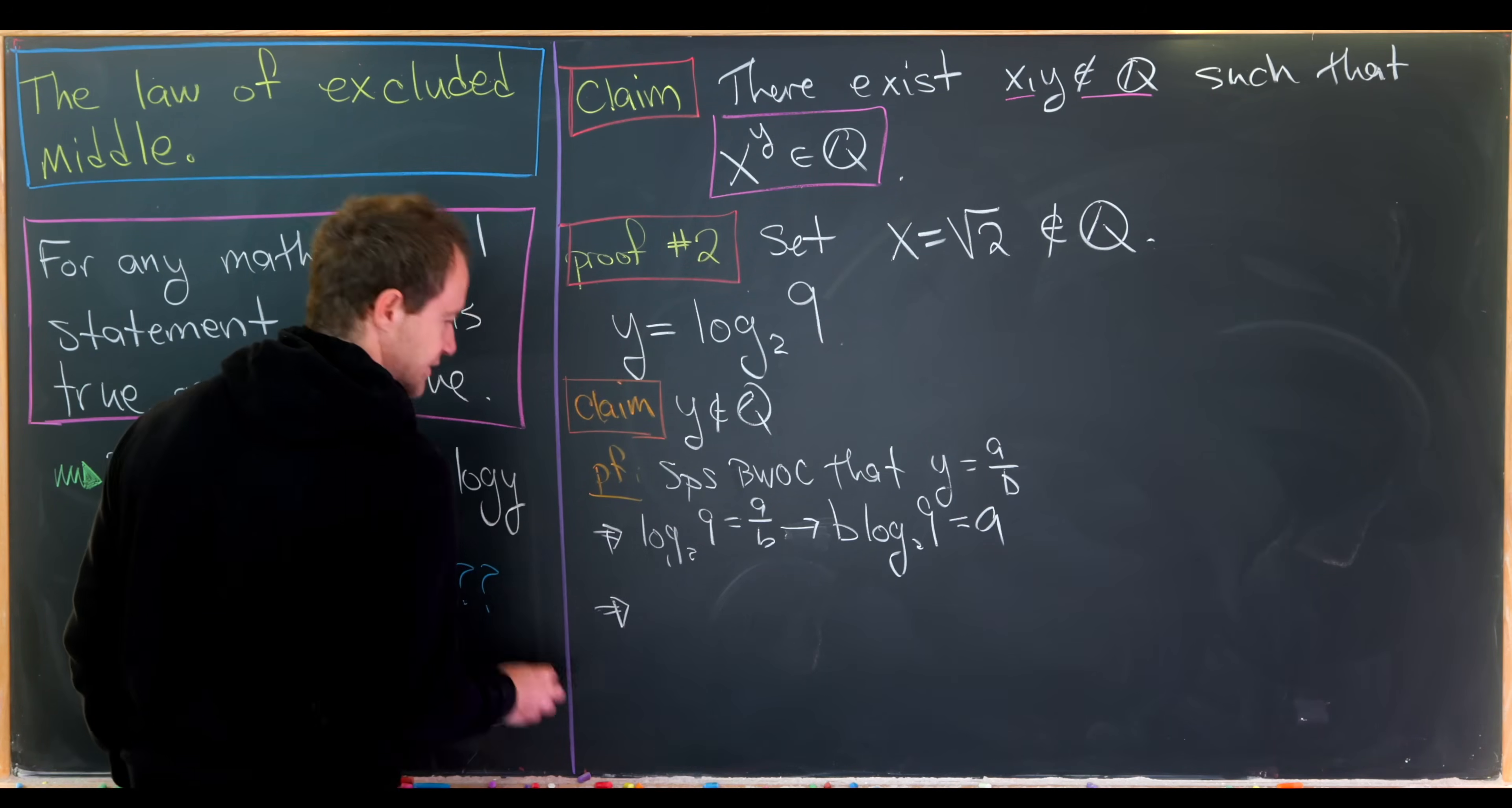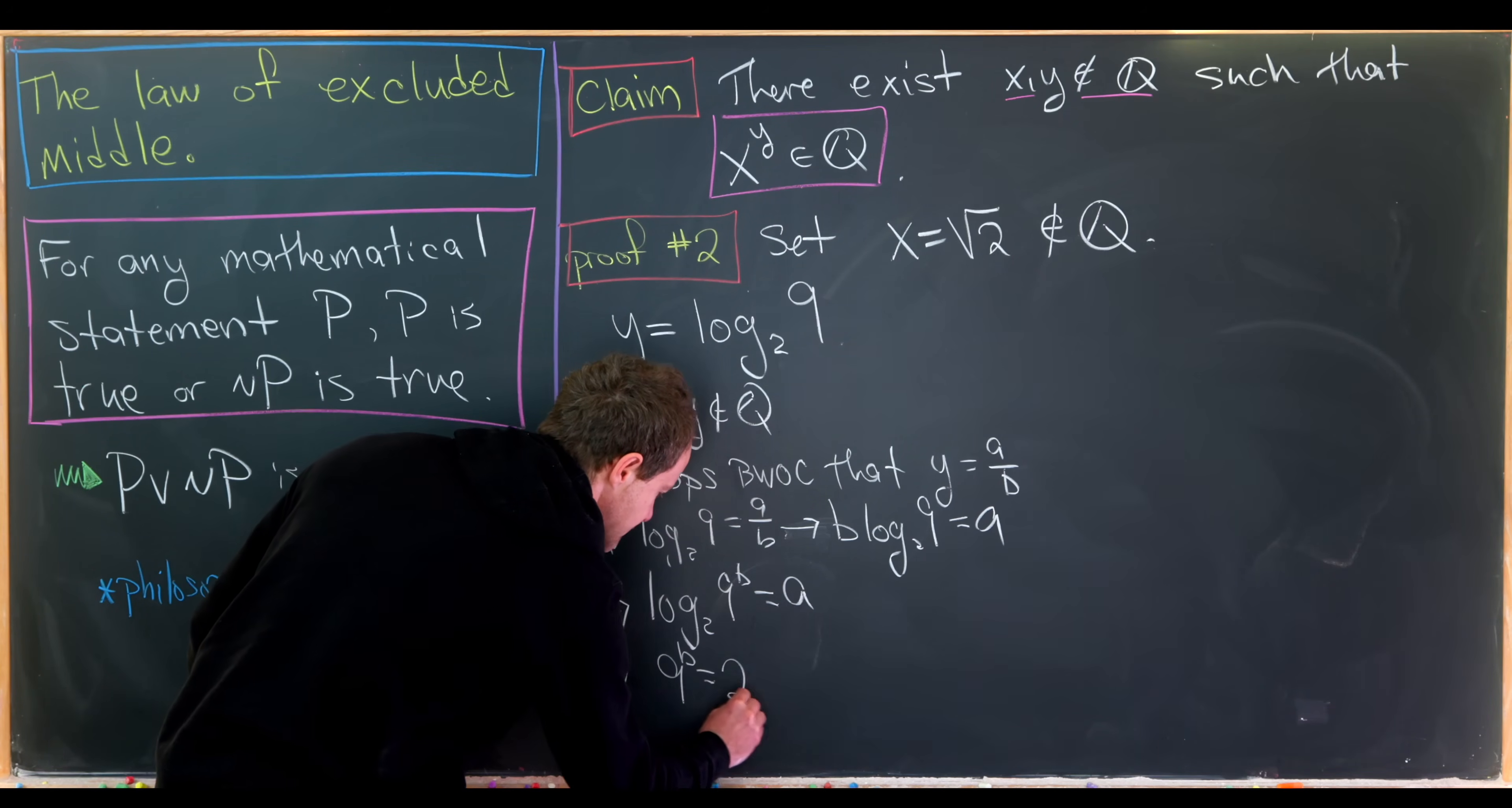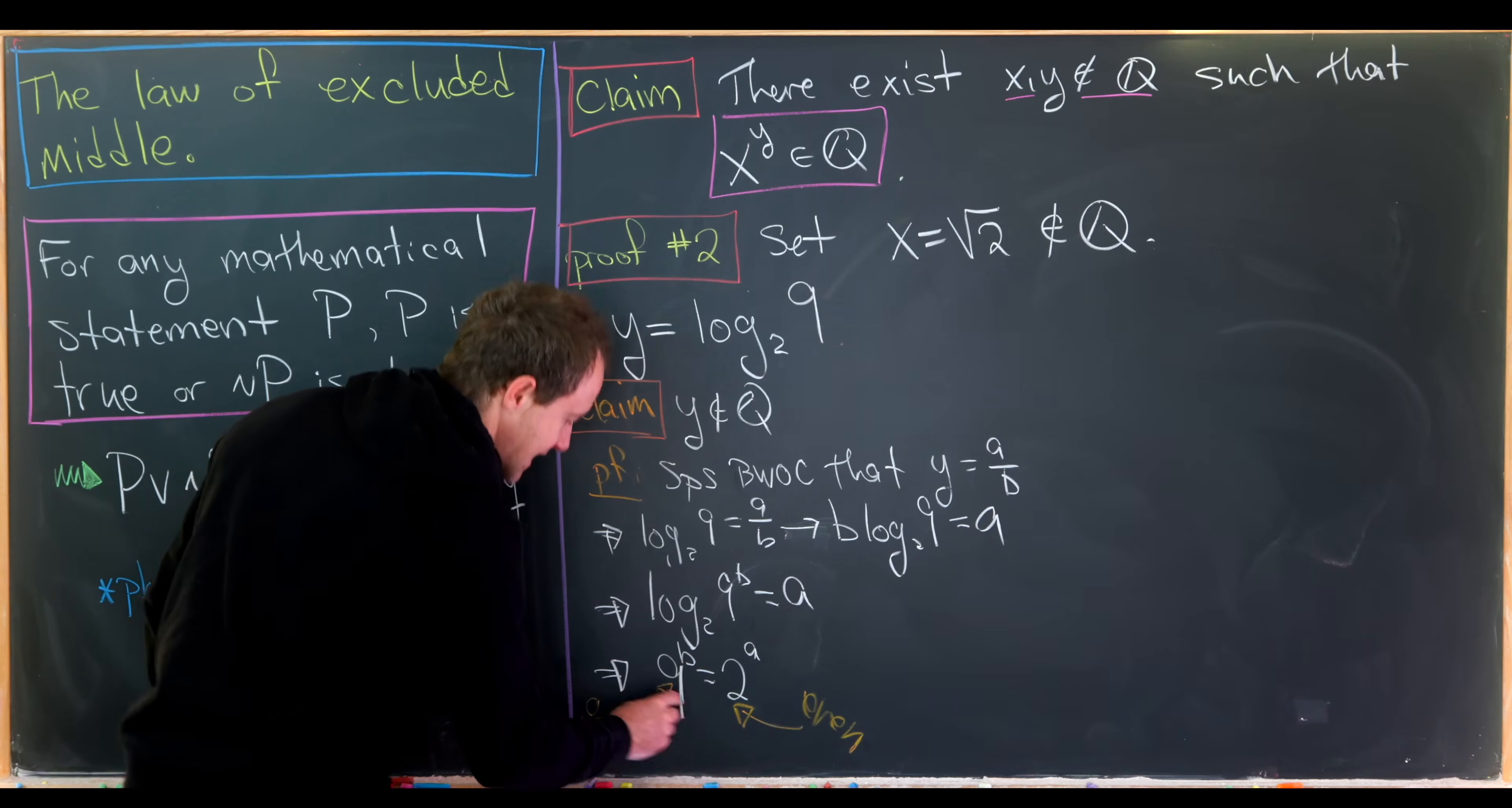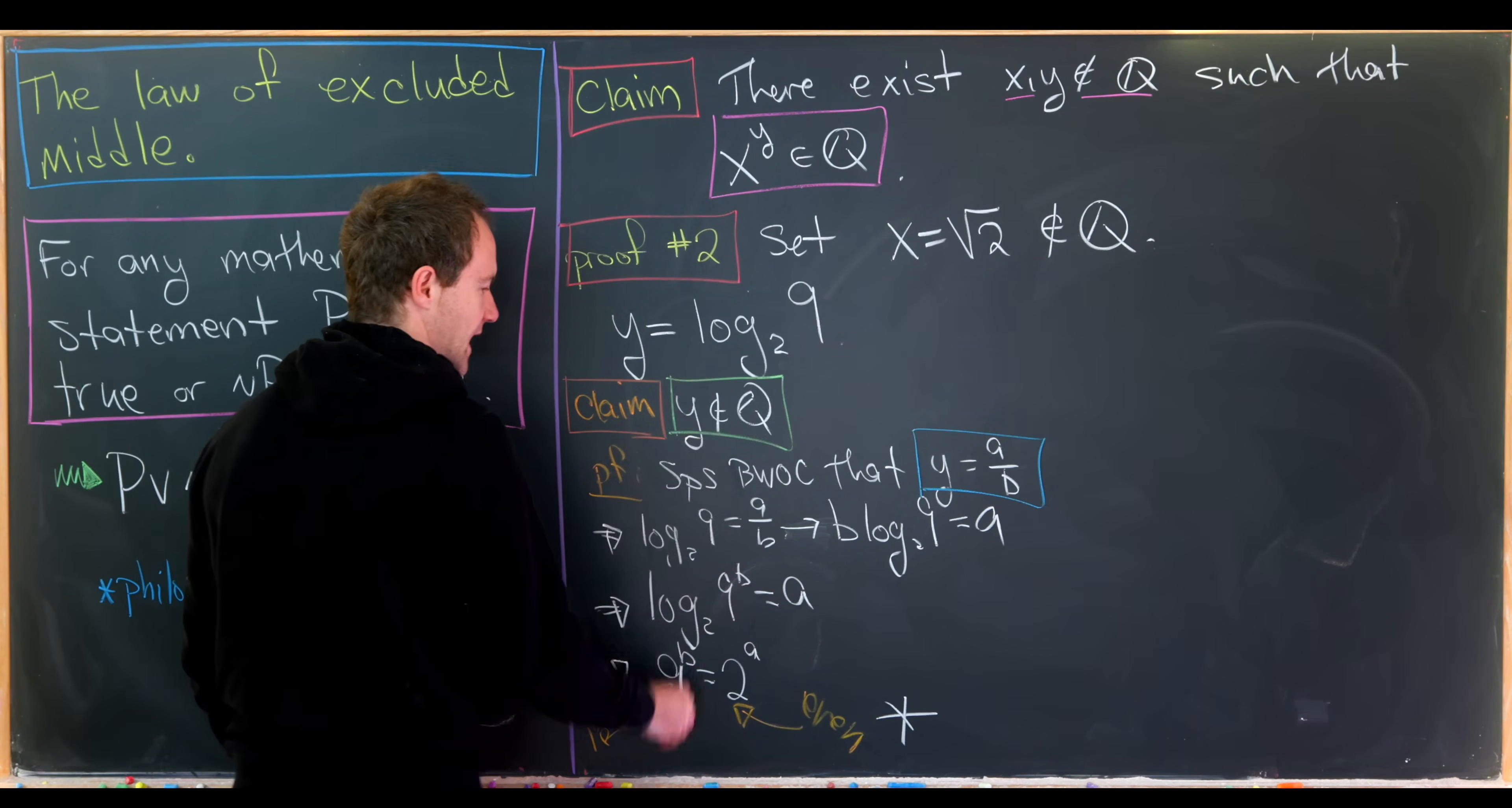But now we can use logarithm-exponential duality to change this from a logarithmic equation to an exponential equation. And that will be 9 to the b equals 2 to the a. But now we've reached our contradiction. That's because 2 to the a is most definitely an even number, whereas 9 to the b is most definitely an odd number. So we have a setup where an odd number is equal to an even number, which, like I said, is a clear contradiction. So what did we contradict? We contradicted this assumption way up here that y was a rational number. So that means it must be impossible for y to be a rational number. So in other words, y is an irrational number.